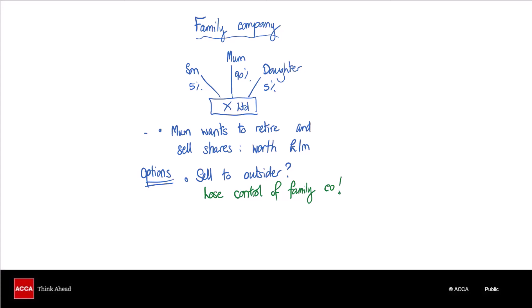Another option would be to sell the shares to the son or the daughter or both. Remember that if mum wants to retire and all of her wealth is built up in that company, she will need the money for her retirement. She could just give the shares to the son and the daughter, but that's not going to achieve her objective. The issue is that the son and daughter probably don't have the cash to buy the shares for a million pounds. Nice idea, but unfortunately that's not going to work either. So this is where our purchase of own shares comes in.